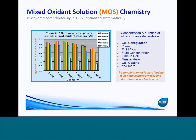Mixed Oxidant Solution chemistry was actually discovered a little bit before MIOX was founded in the early 90s. It was a group of government researchers who were given money to look at different ways of doing electrochemistry. What they found was when they did brine electrolysis under specific conditions, they were able to get different chemistries and quite different responses. Back in those days they were specifically looking at cryptosporidium kill, and this is a representative graph of work they started then and we've continued into the present day in terms of cell optimization.